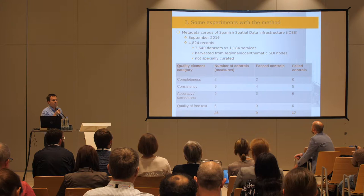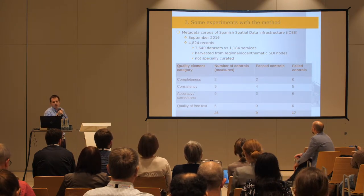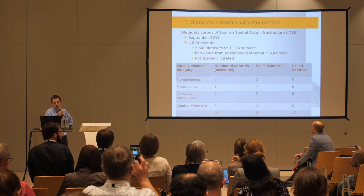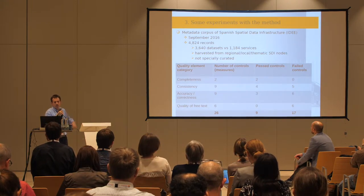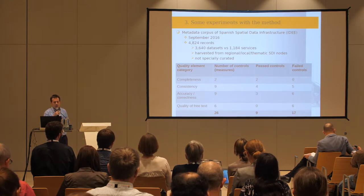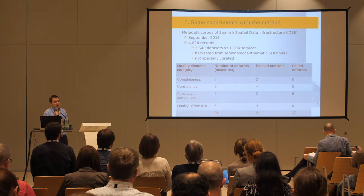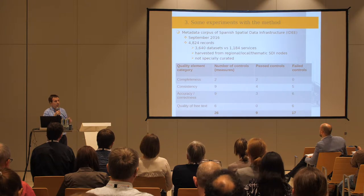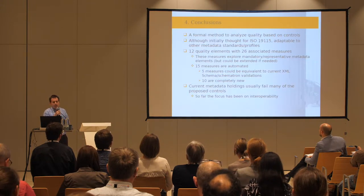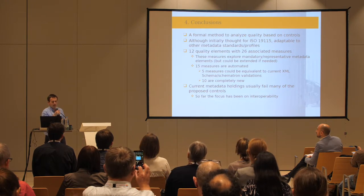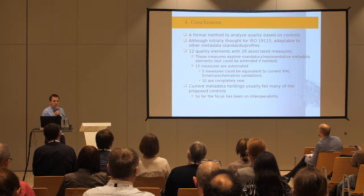We have done some experiments with a metadata corpus of the Spanish spatial data infrastructure. We downloaded the metadata in 2016 — about 4,000 records. The results are not very good because only 9 controls out of 26 measures have been passed, and 17 controls have failed. Especially, we failed in accuracy, correctness, and quality of free text. This is mainly because metadata nowadays is focused on interoperability but does not focus on accuracy and correctness.